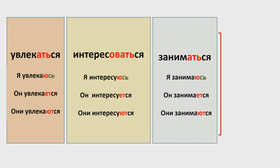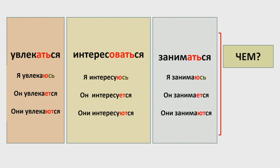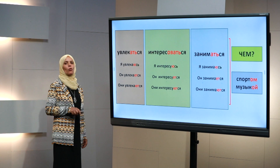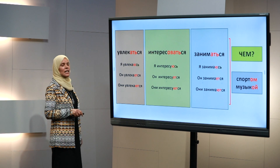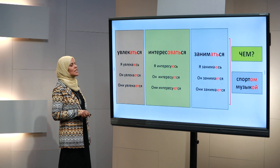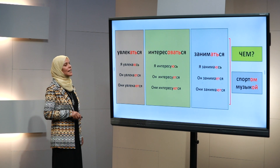Какой вопрос связан с этими глаголами? Конечно: «чем?» — «Чем ты увлекаешься?» — «Я увлекаюсь спортом» — «спортом», потому что спорт — это «он». «Я увлекаюсь музыкой» — «музыкой», потому что музыка — это «она».